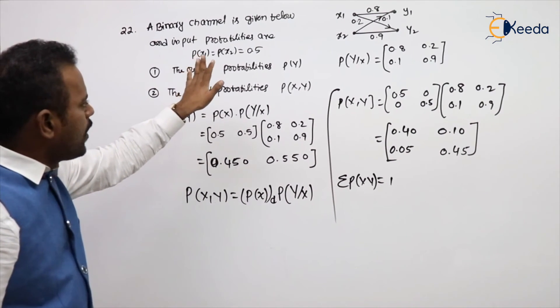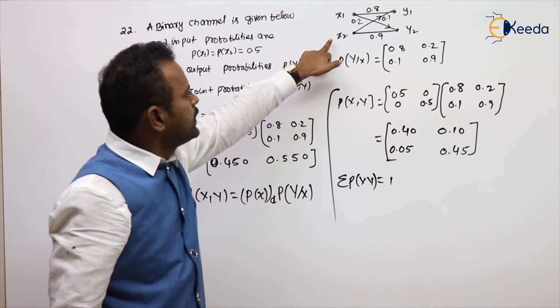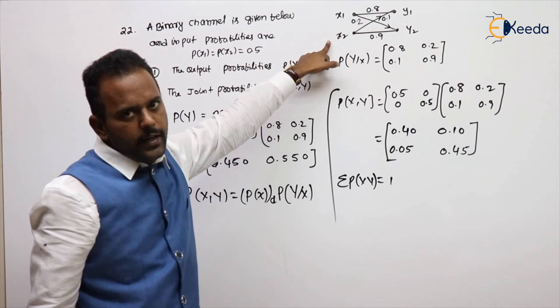This is the way of calculation of output probabilities and joint probabilities if input and channel is given. Clear? Yeah.